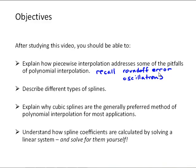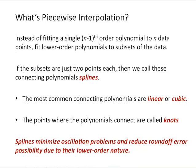Lastly, you should be able to understand how to calculate spline coefficients by solving a linear system of equations. So what's piecewise interpolation? The idea here is instead of fitting a single (n-1)th order polynomial to n data points, we'll fit lower-order polynomials to subsets of the data. Recall in a previous video we fit a tenth-order polynomial to 11 points and saw some problems with oscillations. So instead, a piecewise approach would be to choose subsets of those points and fit lower-order polynomials through those subsets.